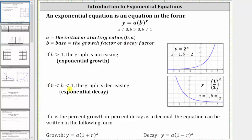If the base b is between zero and one, the graph is decreasing and we have exponential decay. Here we see the graph of y equals one-half raised to the power of x, which means a is equal to one and b is equal to one-half. Because one-half is between zero and one, this is exponential decay. Notice how the graph goes downhill from left to right, or the graph is decreasing.